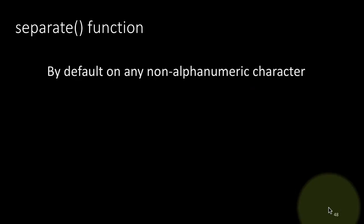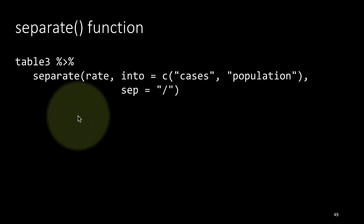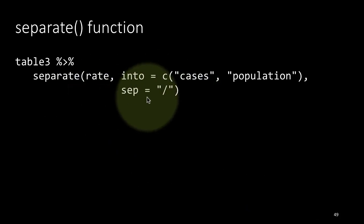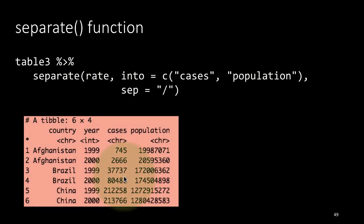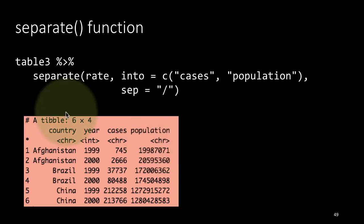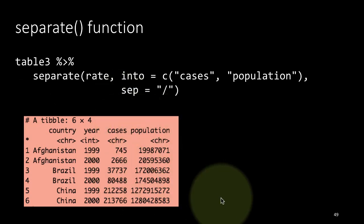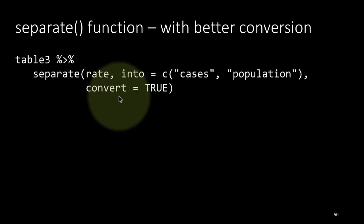There is however a subtle issue when you use separate. Whether or not you specify sep, when you separate the rate column into cases and population, pay attention to the type of the resulting columns — both cases and population are treated as character columns by default. When you separate one column into others, the resulting columns are always character type, even though in this case we know the values should be numbers.